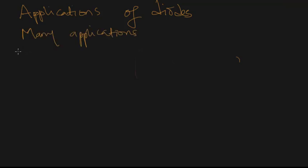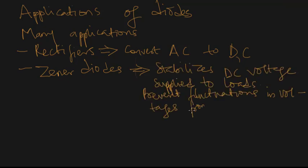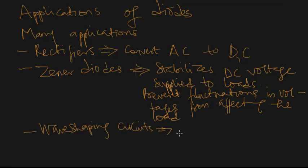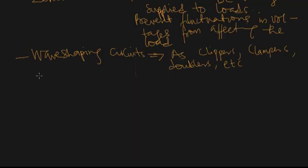Now I want to look at applications of diodes. There are many applications. Diodes can be used as rectifiers, which convert AC to DC. Then we have Zener diodes, which are stabilizer diodes — they stabilize the DC voltage to avoid fluctuations in the voltage supply to the load. Apart from rectifiers and Zener diodes, we also have wave shaping circuits such as clippers, clampers, and doublers.